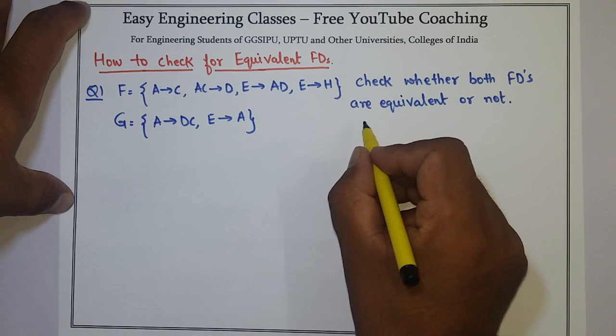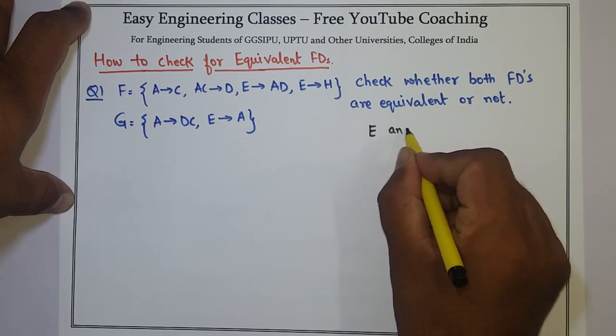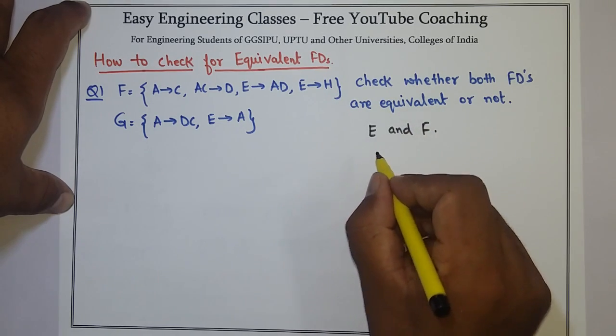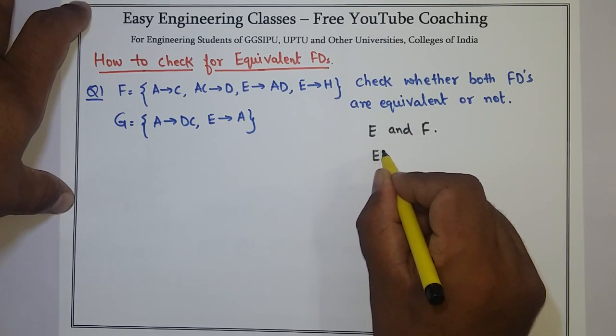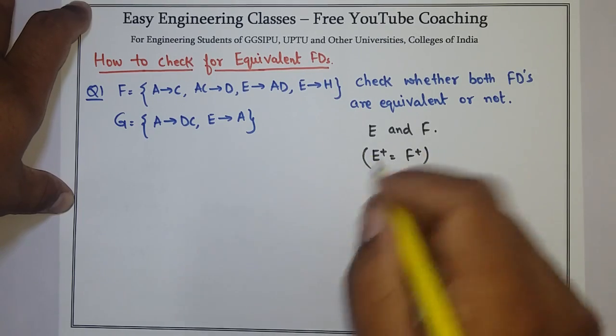Suppose if I have two FDs, E and F. Now these two FDs are equivalent if E plus is equals to F plus.